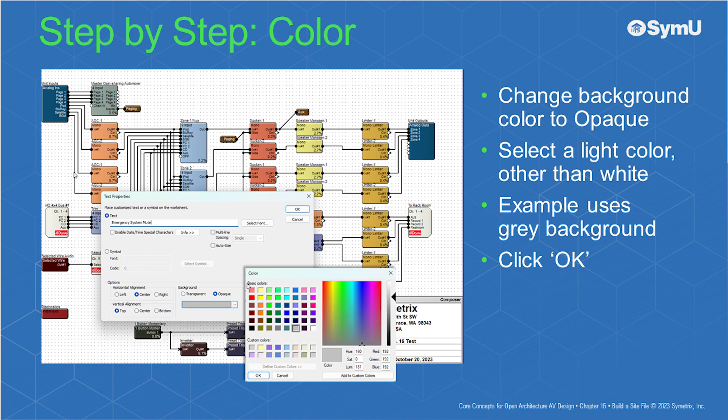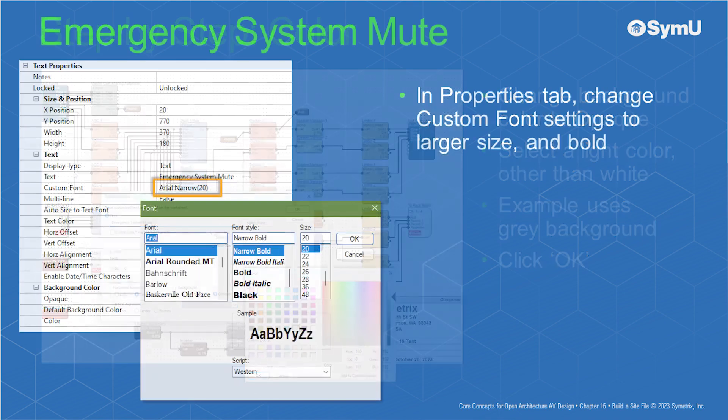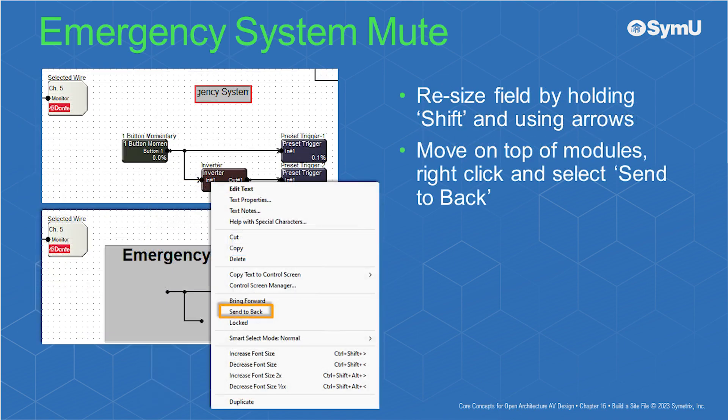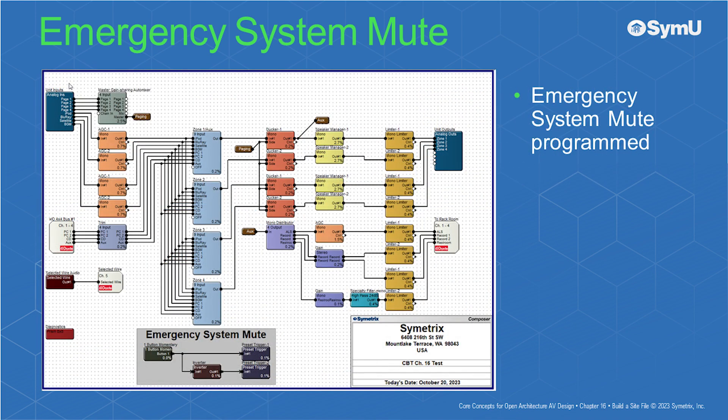Add a text box from the toolkit and edit the text to read 'emergency system mute.' Disable auto size and check vertical alignment to top. Change the background color to opaque and select a light color other than white — this example uses a gray background — then click OK. Once placed, in the properties tab, change the custom font settings to a larger size and set it to bold. Resize the text box by holding the shift key and using the keyboard arrow keys. Move the box on top of the logic modules, right-click and choose send to back. The emergency system mute is now programmed.